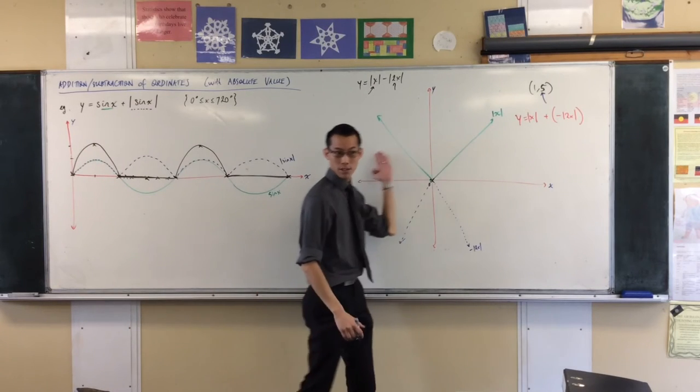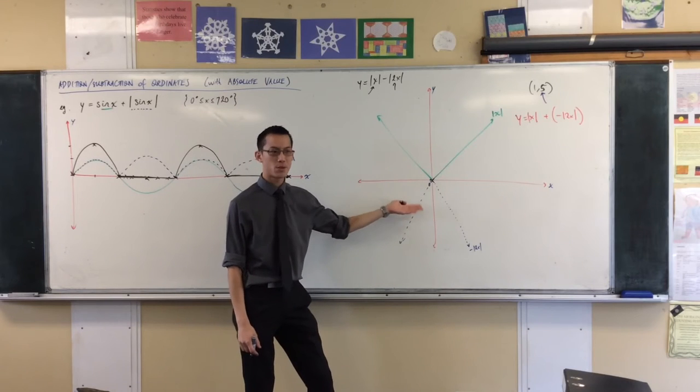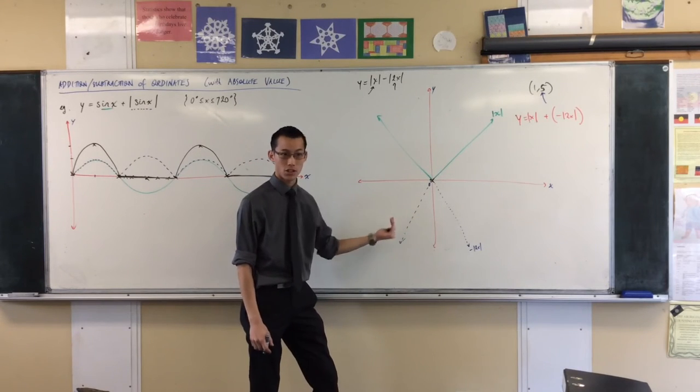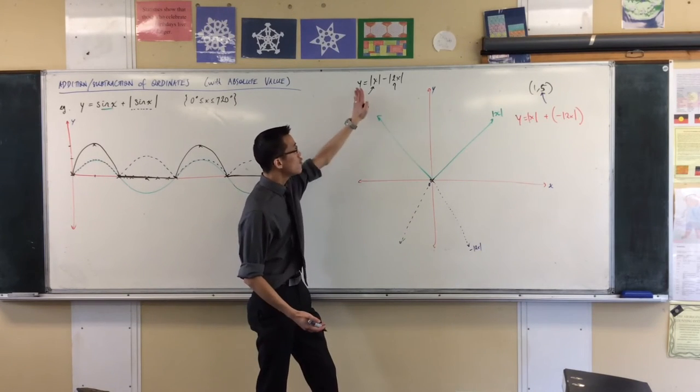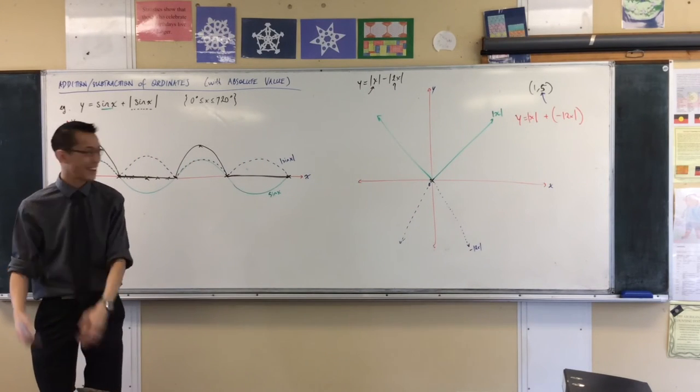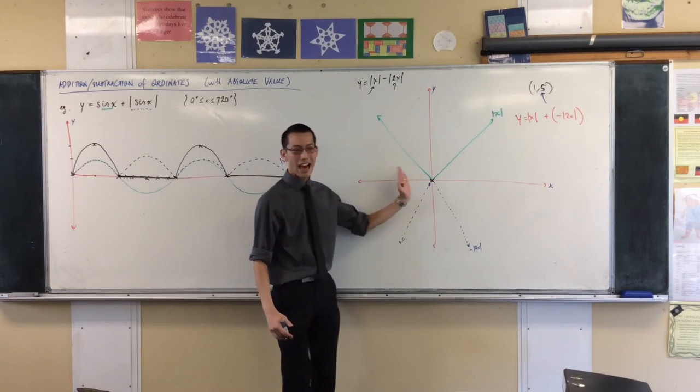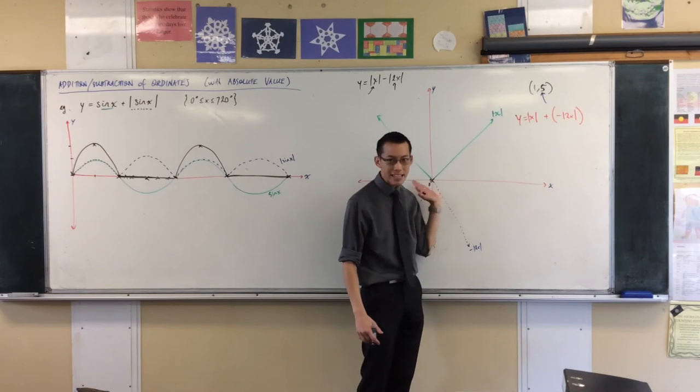Because you've got this reflective symmetry across the x-axis. The negative absolute value of 2x, also an even function. So therefore, when you add or subtract two even functions, you're going to get another even function. So I'm going to be super cheap, as all mathematicians should strive to be, and I'm just going to do one side of this.